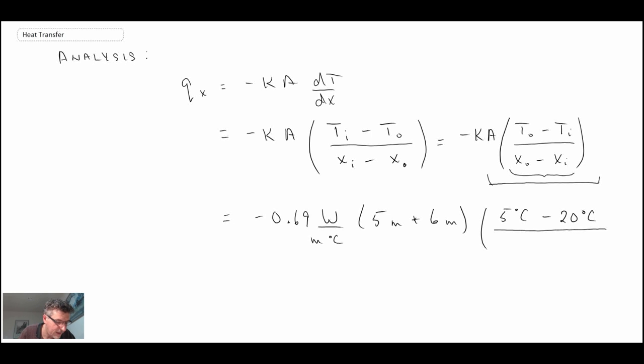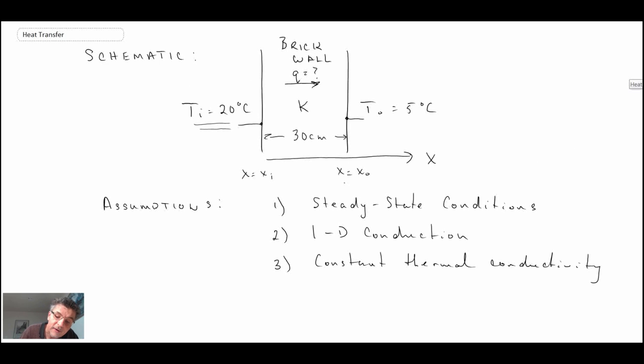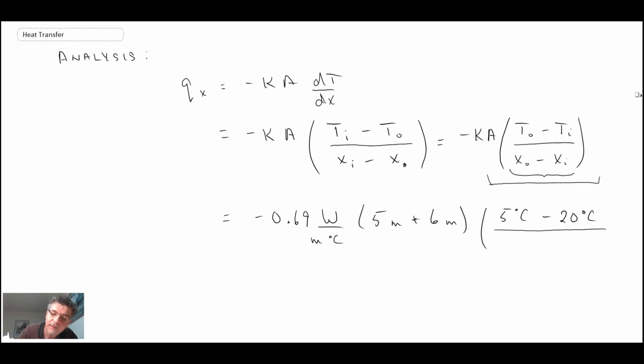And then we're going to divide that by, let's look back at our schematic. So we're going to take X outer minus X inner, and that is just 30 centimeters. So, expressing that in meters, and we have that. So, plug this into your calculator, and you find Qx for this brick wall is 1,035 watts, or 1,035 joules per second.